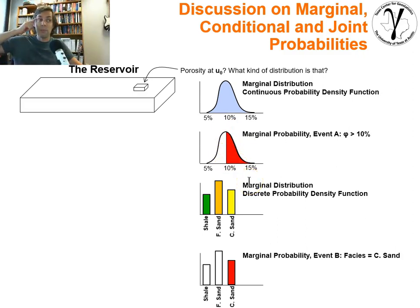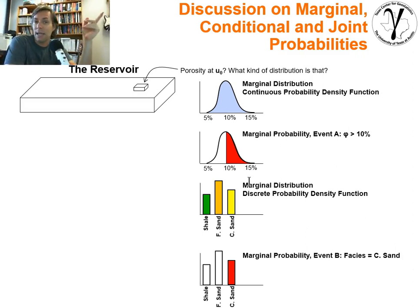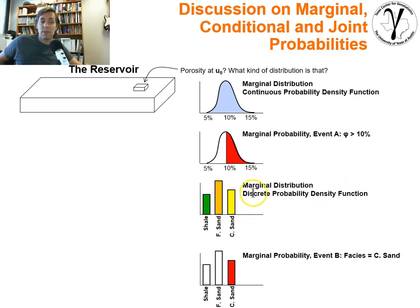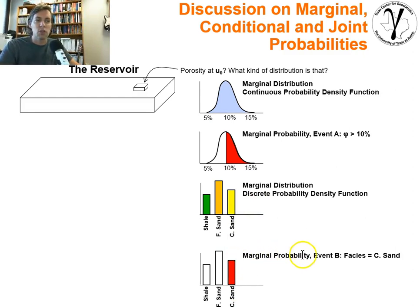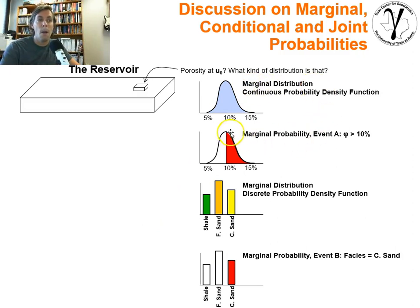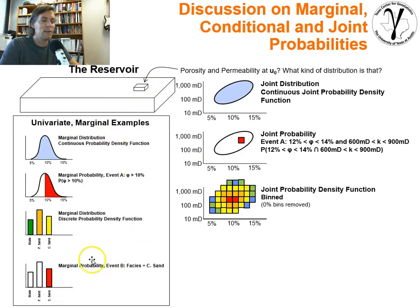We could also be dealing with a discrete property, and we may be concerned about the marginal distribution of shale, fine sand, and coarse sand. We look at the probability density function for the discrete case. You could specify the probability of coarse sand — now we're talking about a marginal probability where event B is: facies at that unknown location equals coarse sand. That probability might be about a third, or 33%. So that's the concept of marginal distribution and marginal probability, for both continuous and categorical cases, for estimating reservoir properties at this unknown, undrilled location.